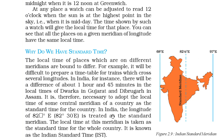In India, the longitude of 82 and a half degrees — that is 82 degrees 30 minutes East — is treated as the standard meridian. The local time at this meridian is taken as the standard time of the whole country, and this is known as Indian Standard Time, IST. This dotted line shows the meridian taken for the Indian region.